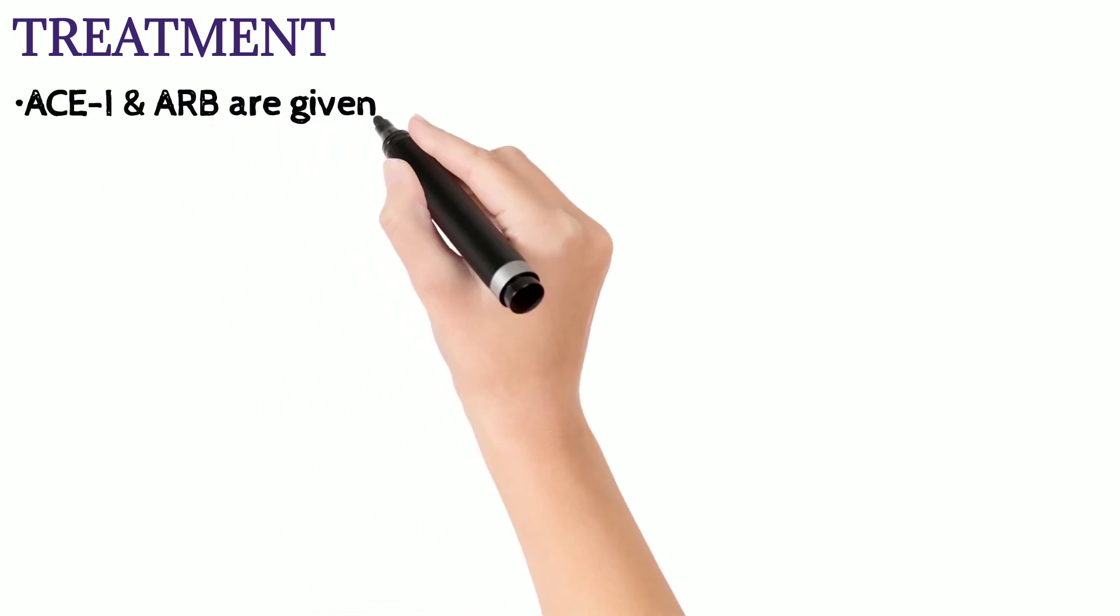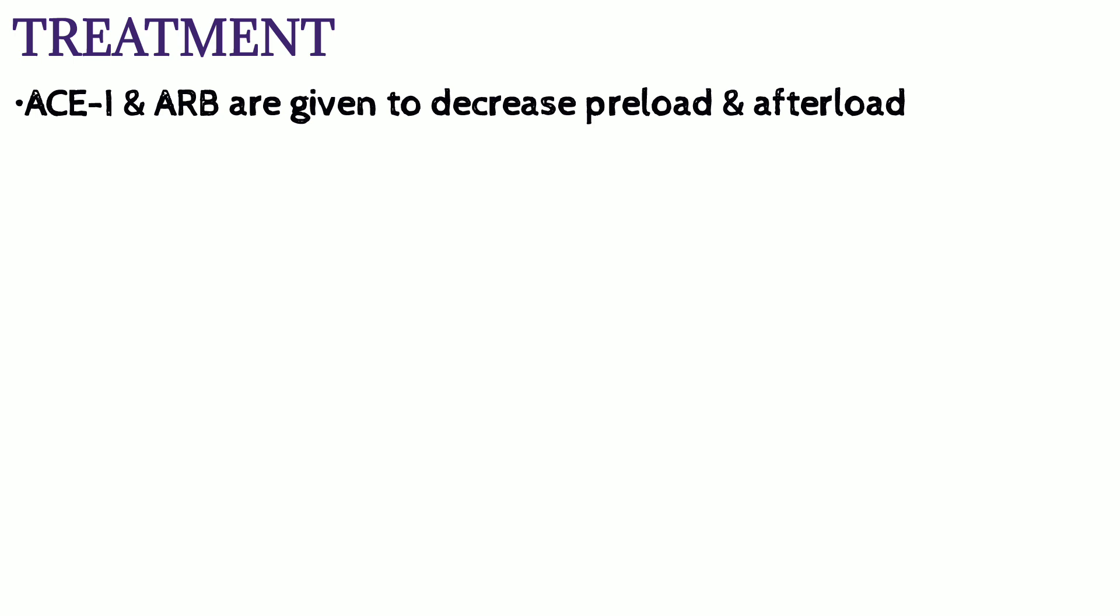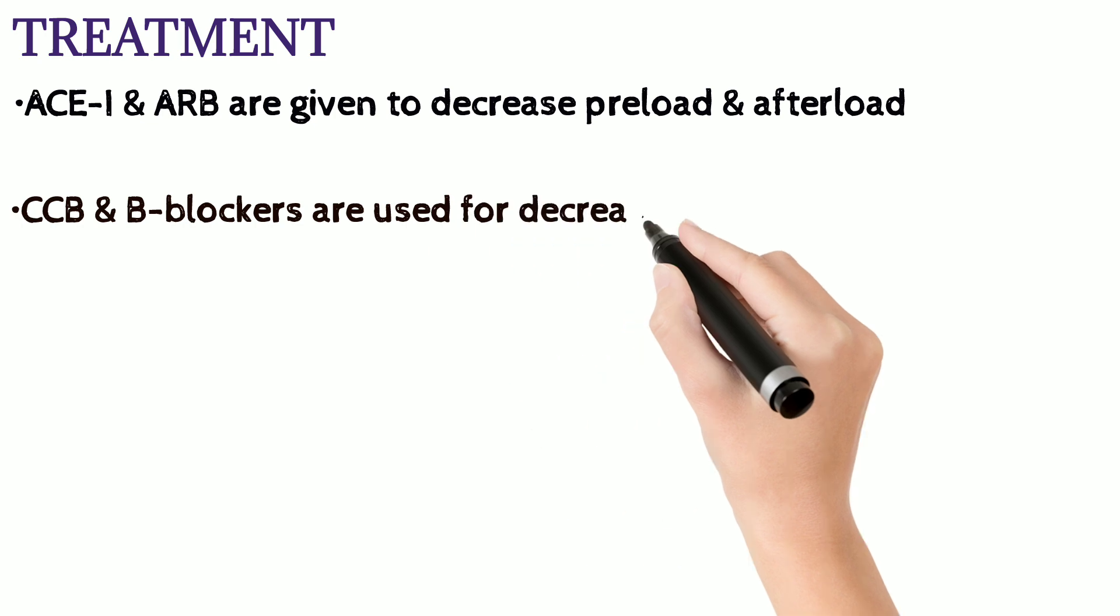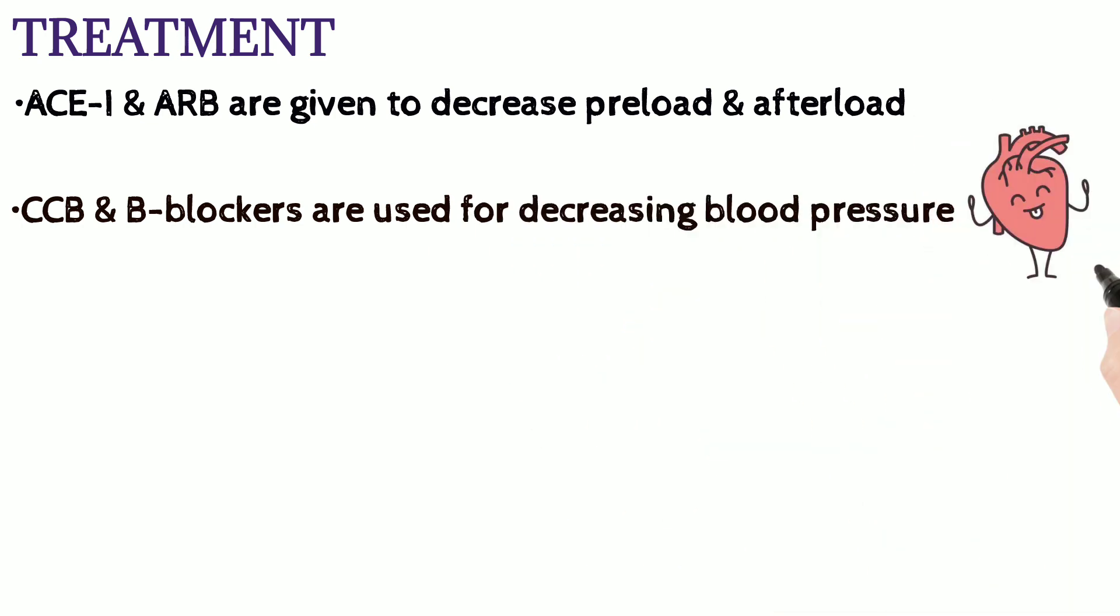The treatment of patients suffering from CHF depends on the stage of the disease. Drugs like ACE inhibitors and ARBs are given to decrease preload and afterload. Drugs like calcium channel blockers and beta blockers are given to reduce blood pressure and for cardiac remodeling.